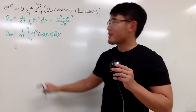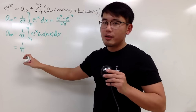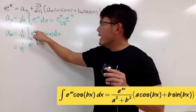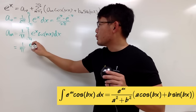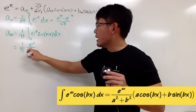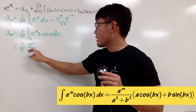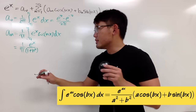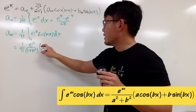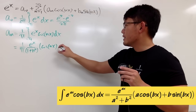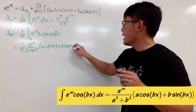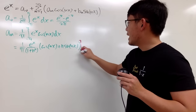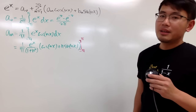The result: keep the one over π out front. When you integrate e^x · cos(nx), you get e to the x over (a² + b²), which here is 1 + n². Inside you have cosine of nx, plus n times sine of nx. We then plug in the limits π and negative π.